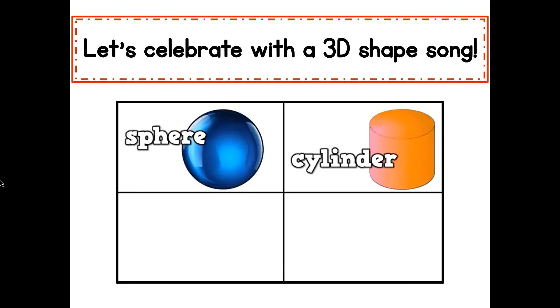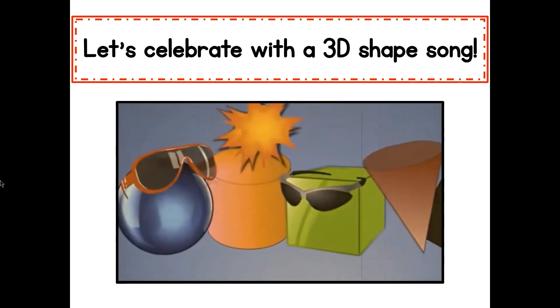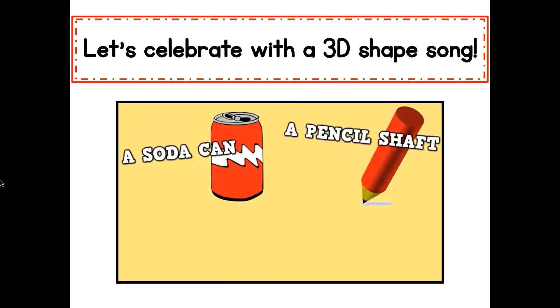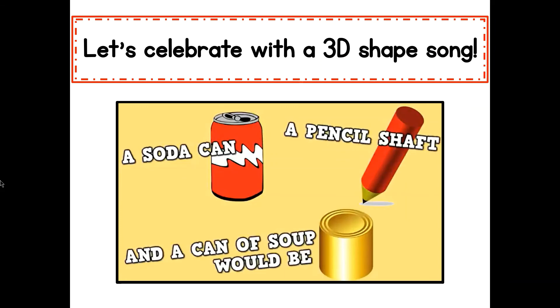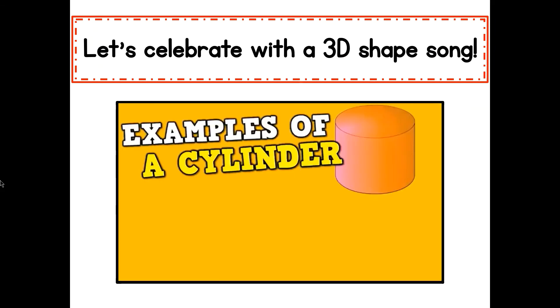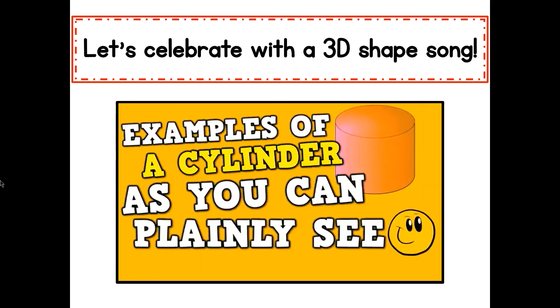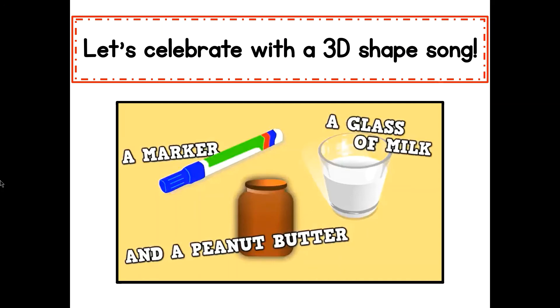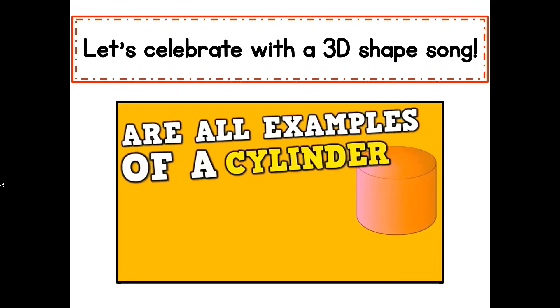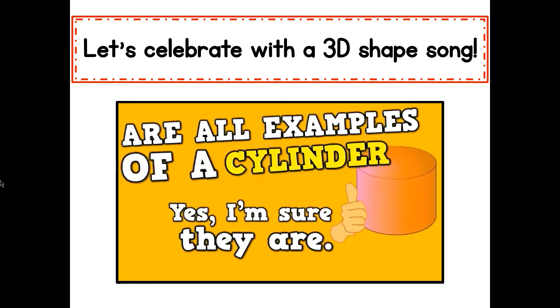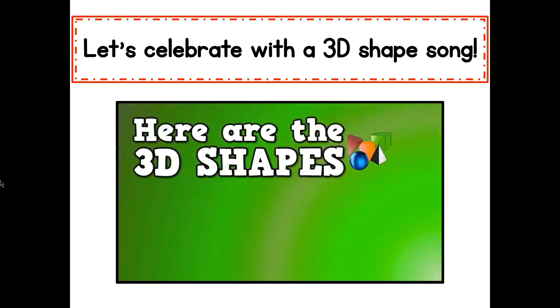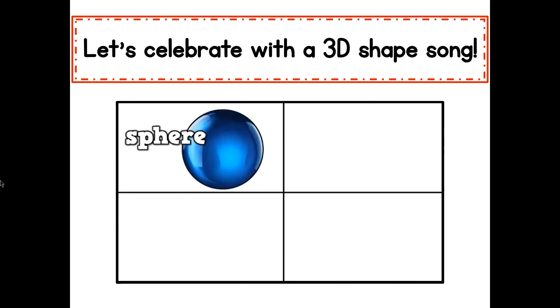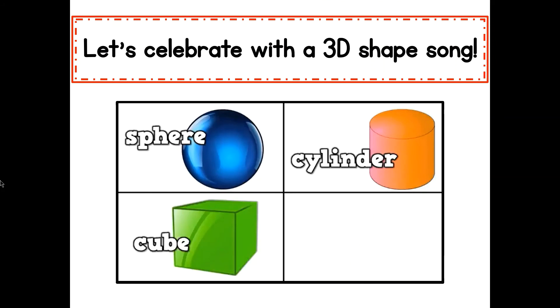Here are the 3D shapes that I know. A sphere, a cylinder, a cube, and a cone. A soda can, a pencil, and a can of soup would be examples of a cylinder as you can plainly see. A marker, a glass of milk, and a peanut butter jar are all examples of a cylinder. Yes, I'm sure they are.